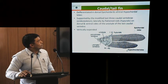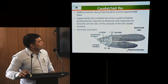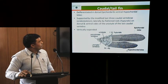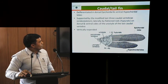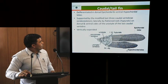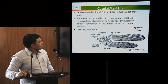The caudal fin, also called the tail fin, is differentiated into dorsal epichordal and ventral hypochordal lobes. The caudal fin is bifurcated: the upper is called the epichordal lobe and the lower is called the hypochordal lobe. This is supported by three caudal vertebrae which are fused to form the urostyle. Around this there are hypurals, about 11 in number, further supported by penultimate and ultimate vertebrae. The fin rays are attached to these hypurals and urostyle and are vertically expanded.